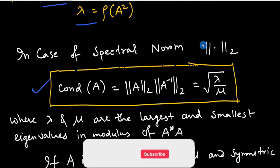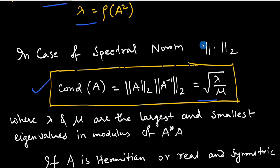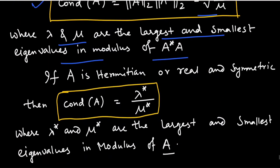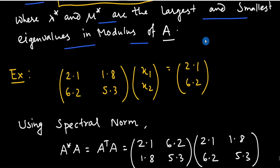For the spectral norm, the condition number is defined as: cond(A) = norm₂(A) × norm₂(A inverse) = √(λ/μ), where λ and μ are the largest and smallest eigenvalues in modulus of A*A. If A is Hermitian or real symmetric, then cond(A) = λ*/μ*, where λ* and μ* are the largest and smallest eigenvalues in modulus of A.